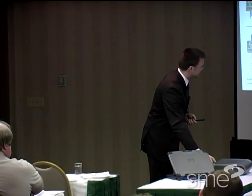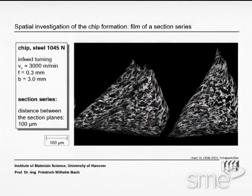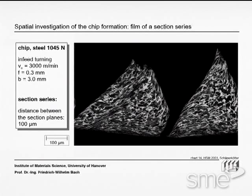In order to get a better impression of that, we have made a series of cross-sections and put them together to a film. Here you see the first cross-section — we are at the border of the chip and we have a distance between the sections of 100 microns.